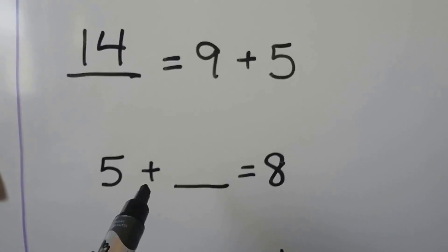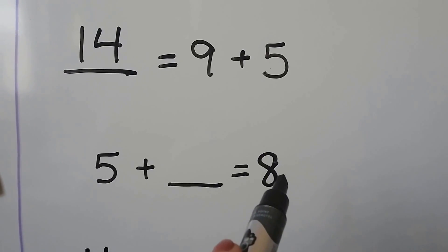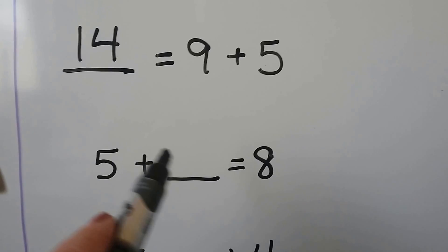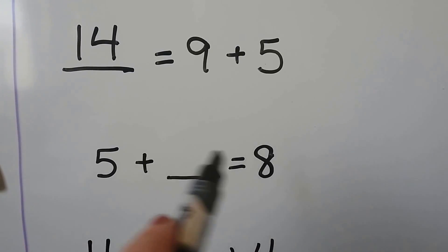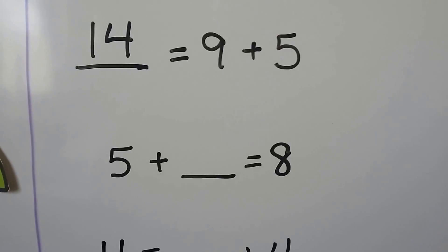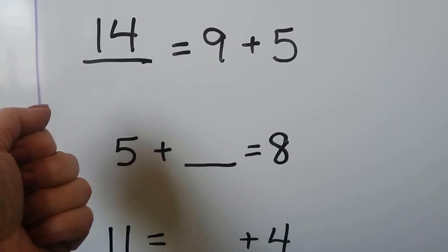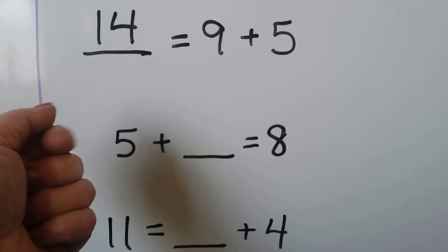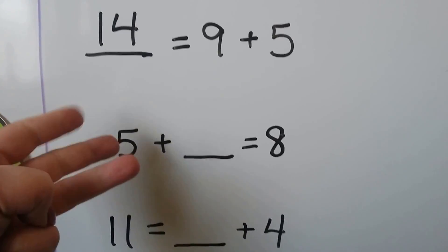5 plus some number is equal to 8. We can use addition and count up to 8. We can start with the 5 and see how many fingers we needed to get to 8: 5, 6, 7, 8. We needed 3.